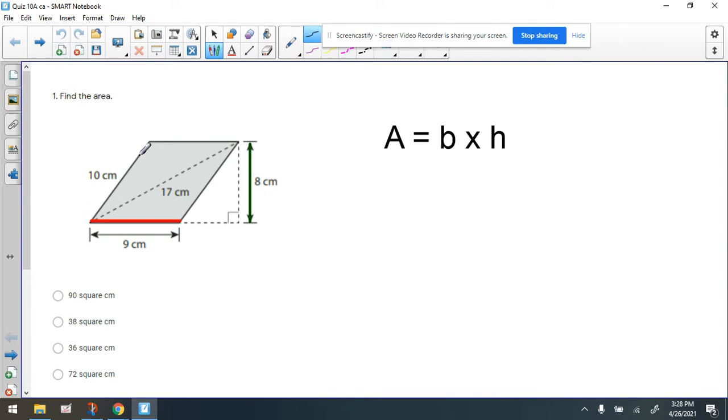How do we know it's a parallelogram? For a couple reasons. Number one, we have opposite sides parallel and congruent. So this side is parallel to that side, and this side is parallel and congruent to this side. So that makes it a parallelogram plus it's a quadrilateral.